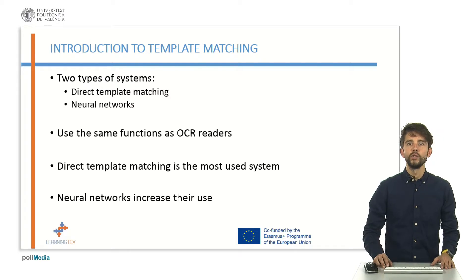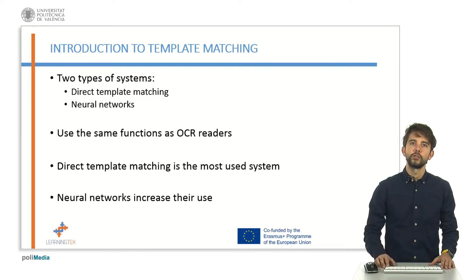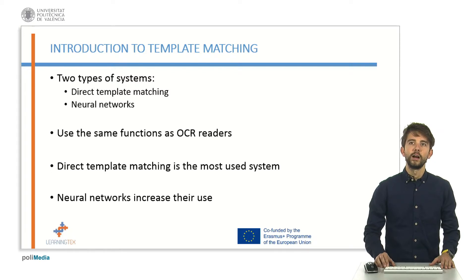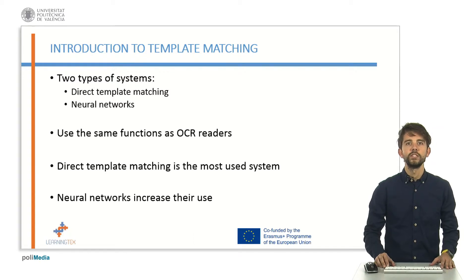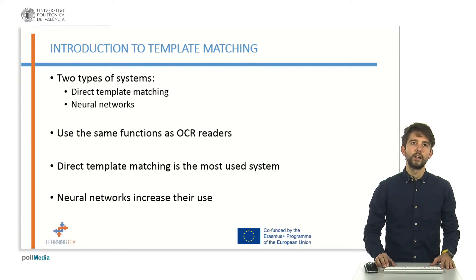As happened with OCR readers, there are two types of readers: direct template comparators and neural networks. OCR readers and template-related algorithms are based on the same functions but looking for different results. The most used system is direct template comparators, but due to technological advances, neural network systems are becoming increasingly more common.